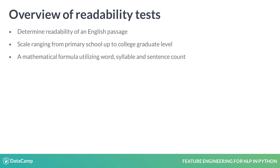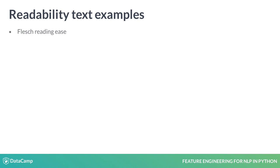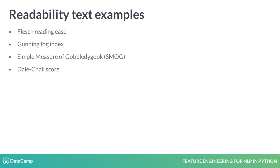They have also found applications in domains such as fake news and opinion spam detection. There are a variety of readability tests in use. Some of the common ones include the Flesch Reading Ease, the Gunning Fog Index, the Simple Measure of Gobbledygook or SMOG, and the Dale-Chall score. Note that these tests are used for texts in English, though tests for other languages also exist. For brevity, we will cover only the first two scores in detail.